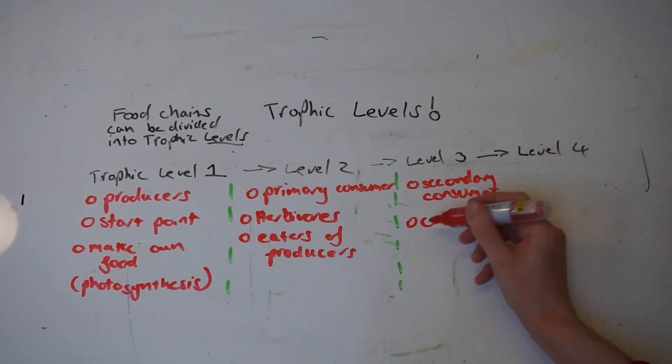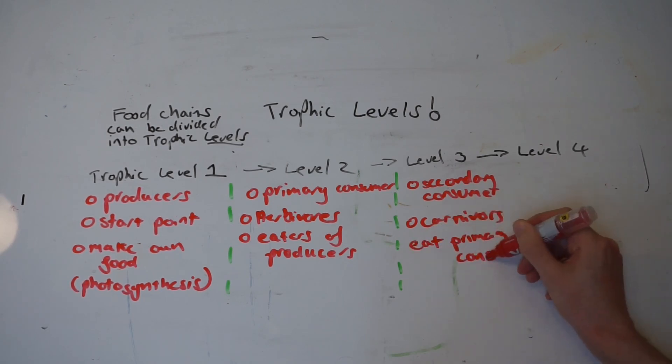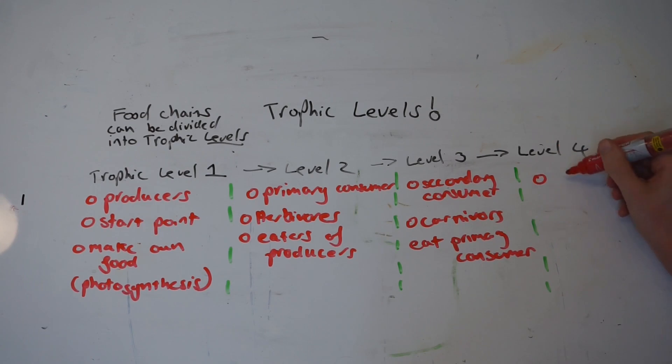So far we've got trophic level one producers, trophic level two primary consumers which eat producers, trophic level three secondary consumers which eat primary consumers. Another stage up from that is level four, trophic level four, which contains what we call tertiary consumers. These tend to be carnivores that eat other carnivores, i.e., secondary consumers.